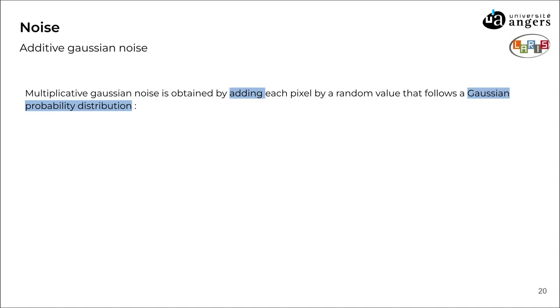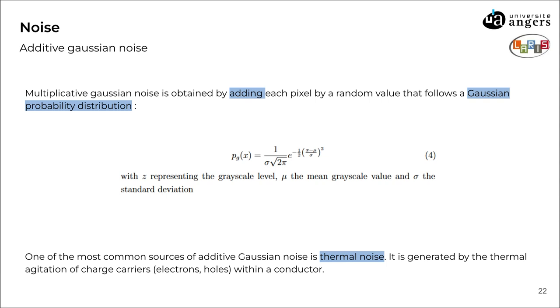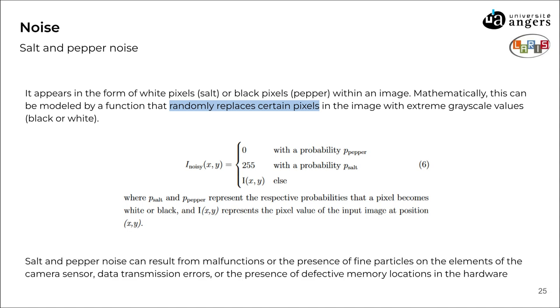We will also be using additive Gaussian noise. It's obtained by adding to each pixel a random value that follows a Gaussian probability distribution. One of the most common sources of additive Gaussian noise is thermal noise, generated by the thermal agitation of charged carriers within a conductor. The last noise is salt and pepper noise, also known as impulse noise. It appears in the form of white pixels (salt) or black pixels (pepper) within an image. Mathematically, it can be modeled by a function that randomly replaces certain pixels with extreme grayscale values. This noise can result from malfunctions, fine particles on the camera sensor, data transmission errors, or defective memory locations in the hardware.